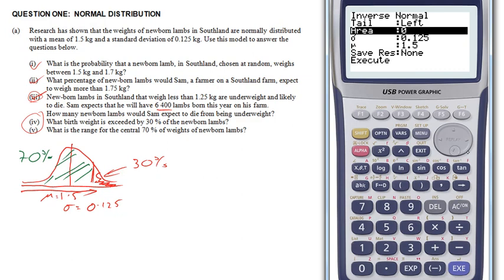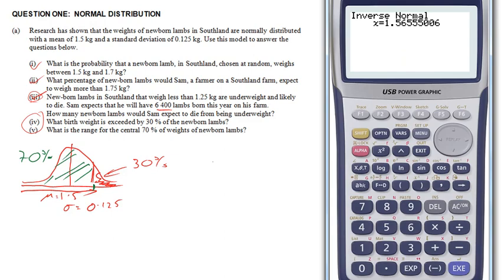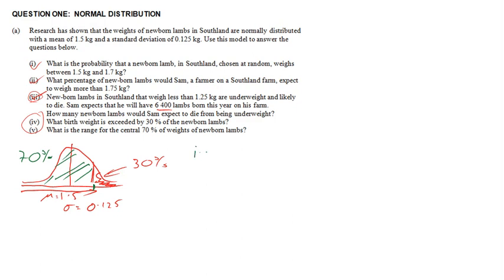So when I come to do this, I move down to there. Now I've got to put percentage in as a decimal, so that's 0.7. That tells me that this value here that is exceeded by 30% of lambs is 1.566 kilograms. Okay, so the x value for number four, 1.566 to three decimal places.